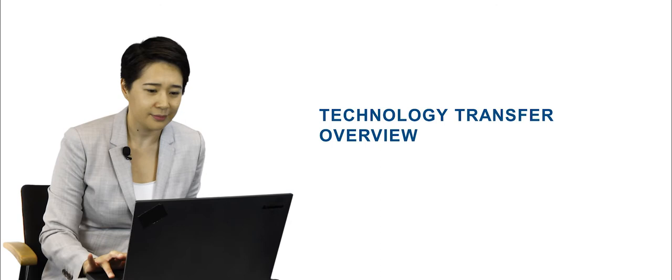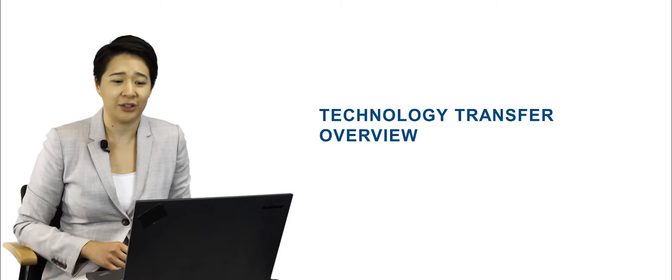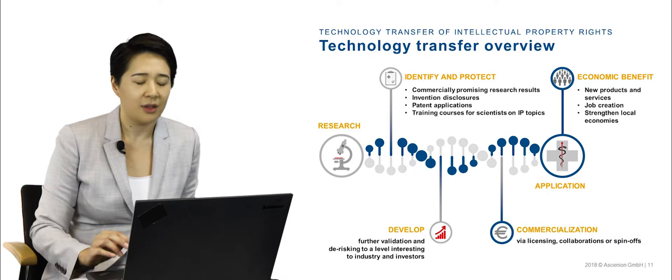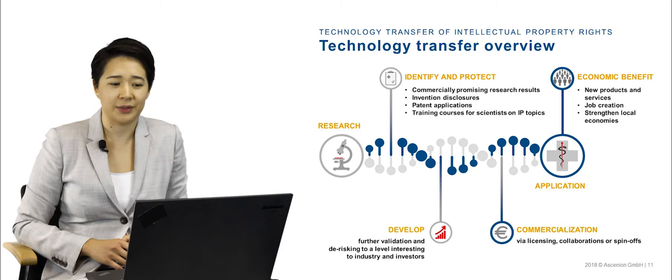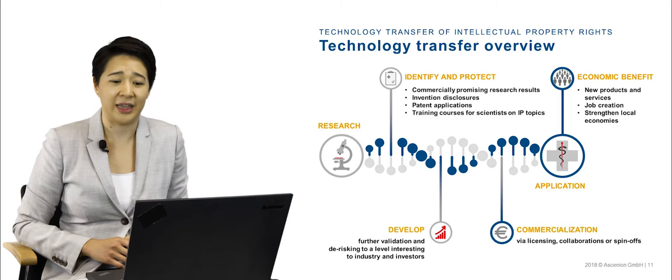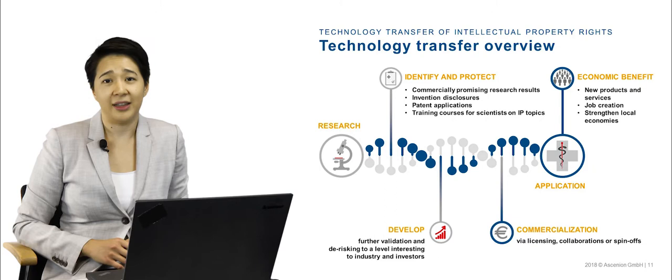Here we will go over some general activities related to technology transfer within a university or research organization. During research activities, there may be new technologies or research results generated that could have commercial potential, such as new therapeutics, diagnostic methods, medical devices, software, or research tools. The Technology Transfer Office is responsible for identifying, evaluating, and protecting these results and inventions — for example, through filing and maintaining patent applications and patents.